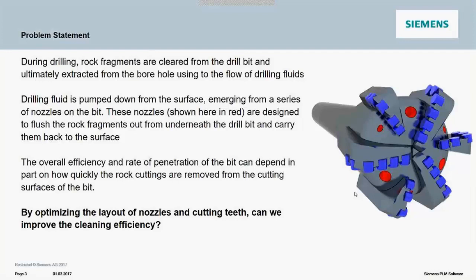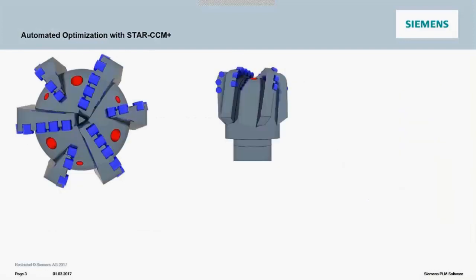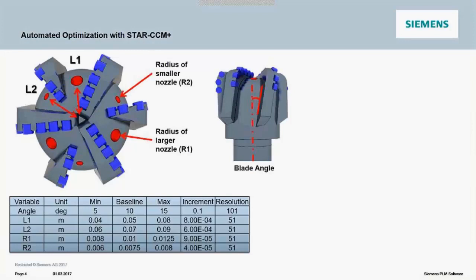The question is: by optimizing the layout of the nozzles and cutting teeth, can we improve the cleaning efficiency of this drill bit? We have a Star CCM Plus CFD simulation already set up, where the geometry is designed using the built-in 3D CAD environment, and a series of design parameters are defined in the model. The user can easily go in and change, for example, the angle of the blades, the radius of the different nozzles, and the offset from the centerline of those nozzles, then rerun the simulation and compare results.